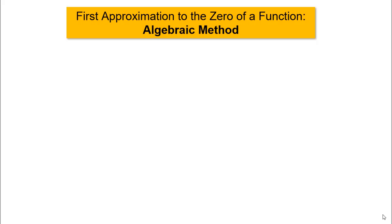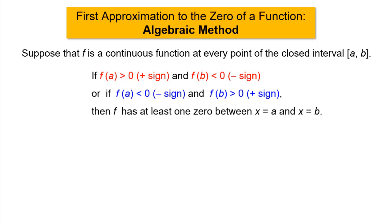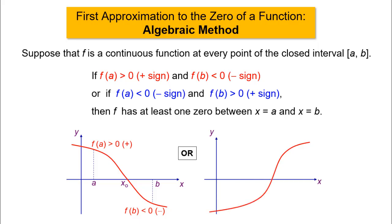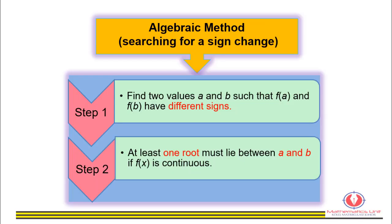In the algebraic method, we seek for the change of sign of f of x when we substitute x with two consecutive integers. If f of a is greater than zero and f of b is less than zero, then there is at least one root between x equals a and x equals b. Step 1: find two values a and b such that f of a and f of b have different signs. Step 2: conclude that at least one root must lie between a and b if f of x is continuous.